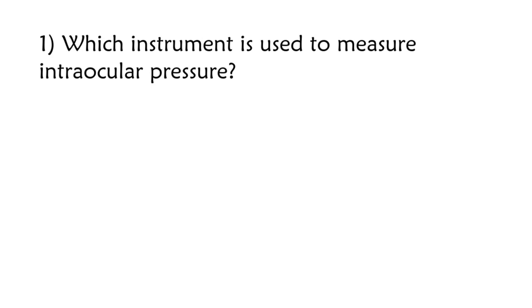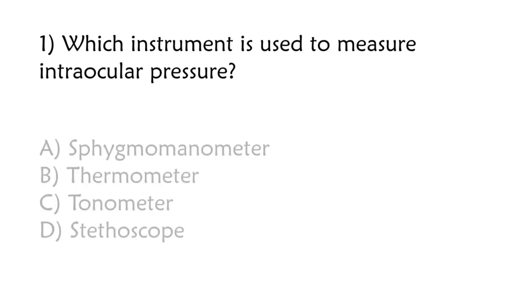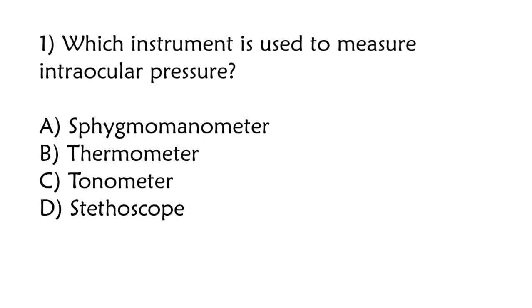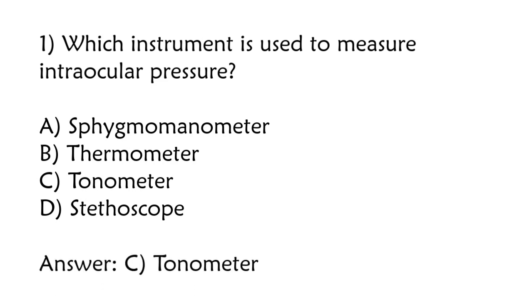Which instrument is used to measure intraocular pressure? Sphygmomanometer, Thermometer, Tonometer, Stethoscope. The correct answer is Option C: Tonometer.